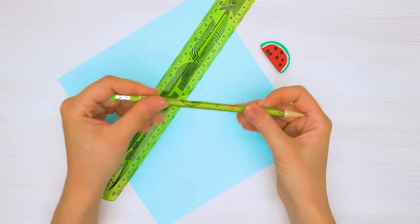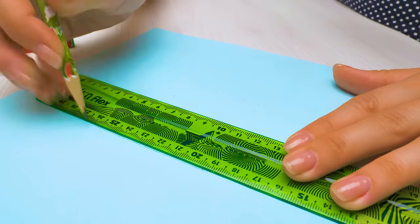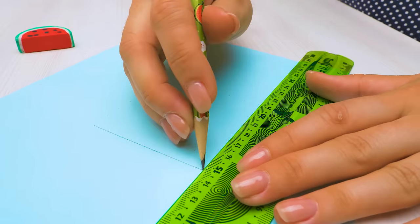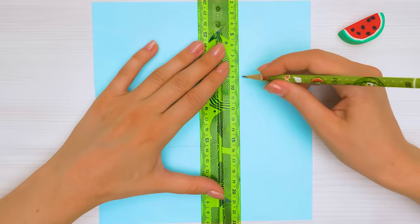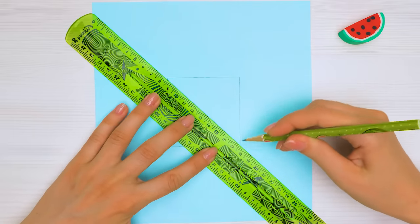I've remembered one more awesome drawing method. Use a ruler to draw a square. It's better not to draw the square too big. This should be enough. Now let's draw a diagonal line.